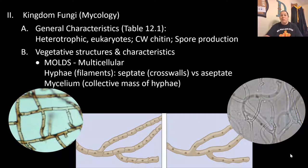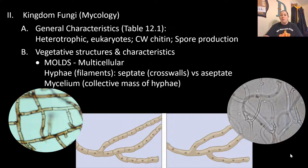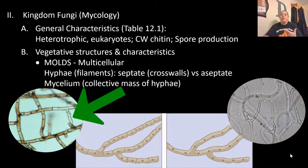Now let's talk about kingdom Fungi — the study of fungi is called mycology. General characteristics: fungi are heterotrophic, they consume their own food, they are eukaryotes, they have a cell wall mostly made of chitin, and they produce spores to reproduce. They have vegetative structures — for molds, these mean they are multicellular. Hyphae are filament-like structures that can have septae, which are cross walls blocking them off, or they can be aseptate with no cross walls.